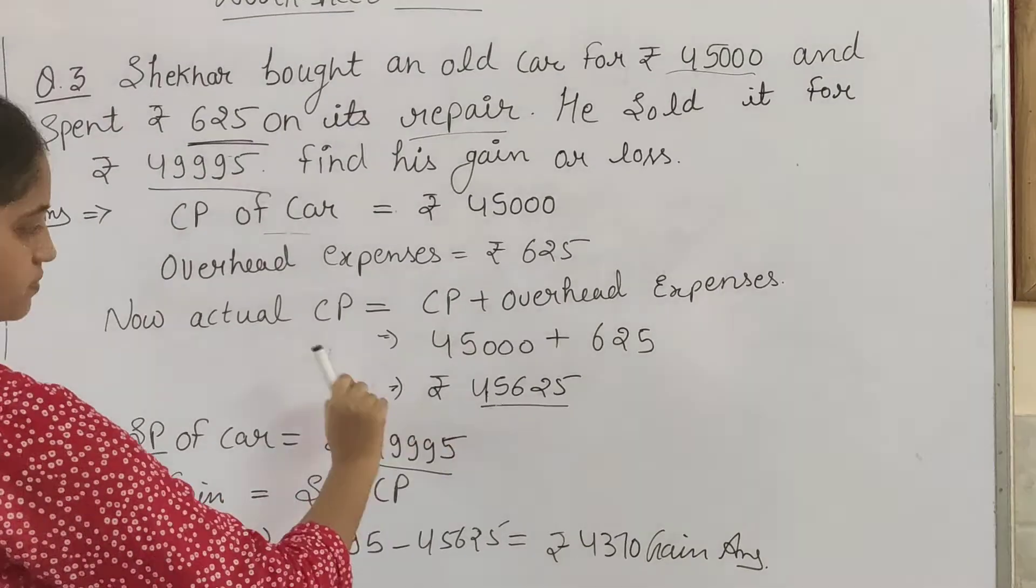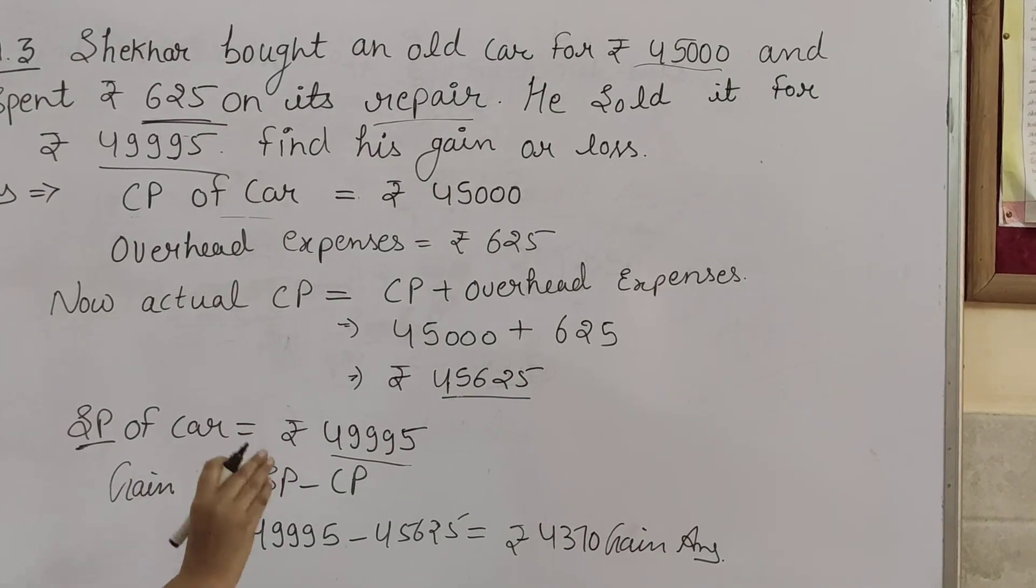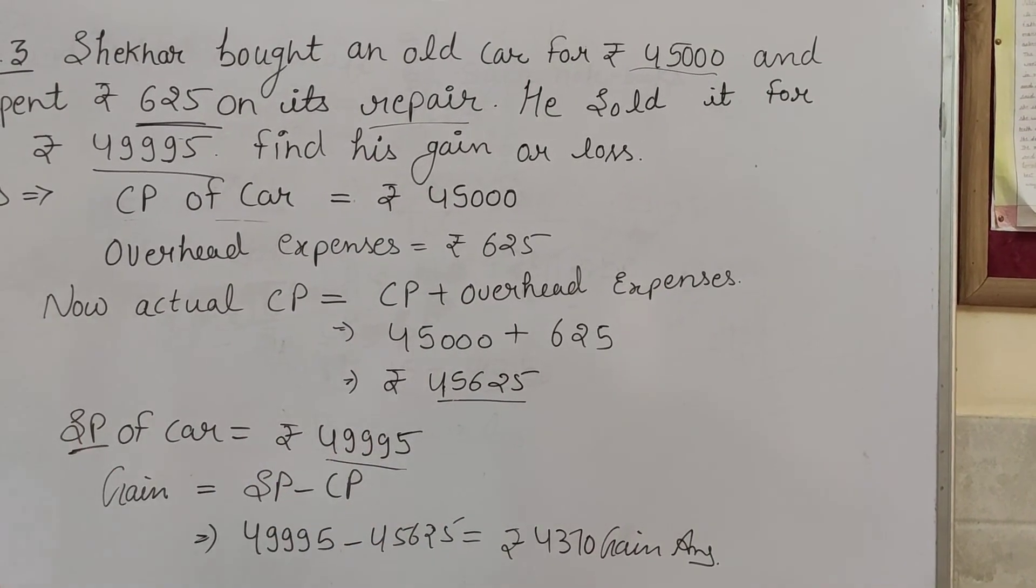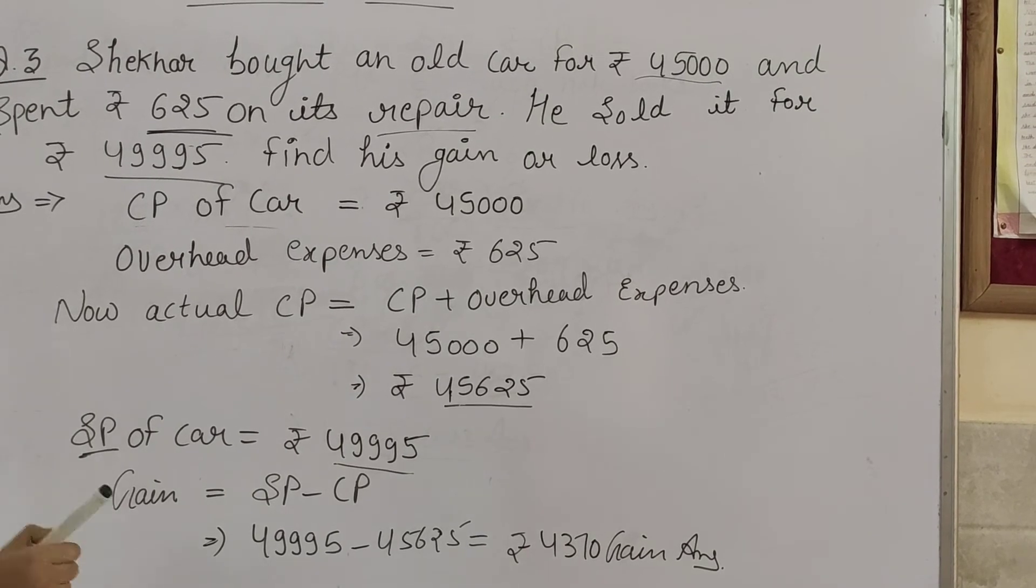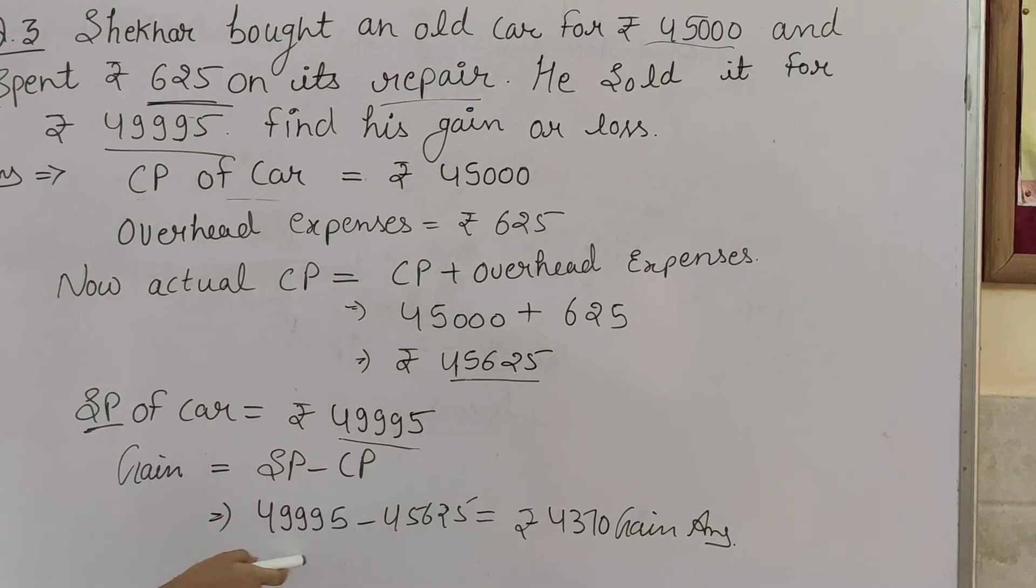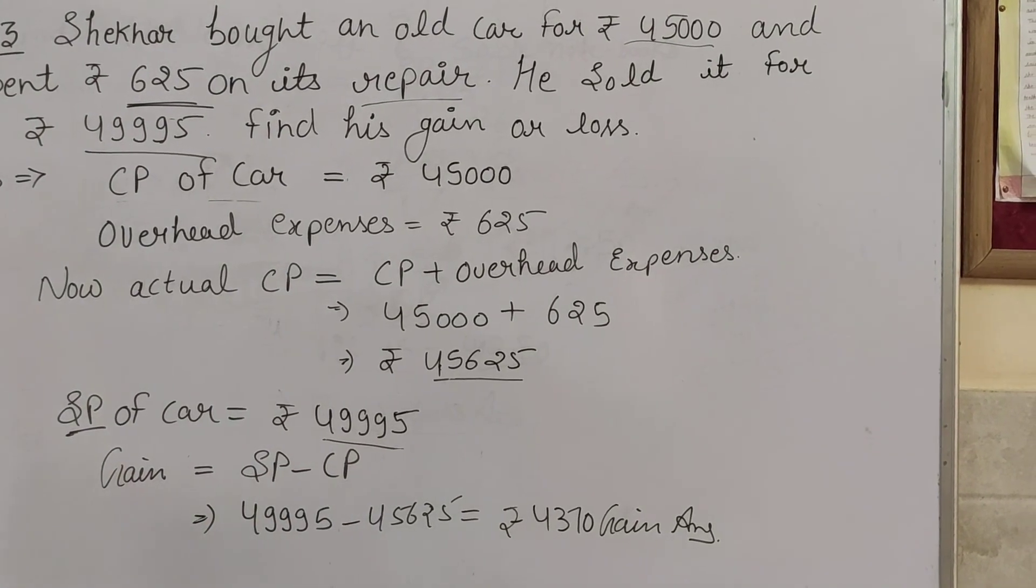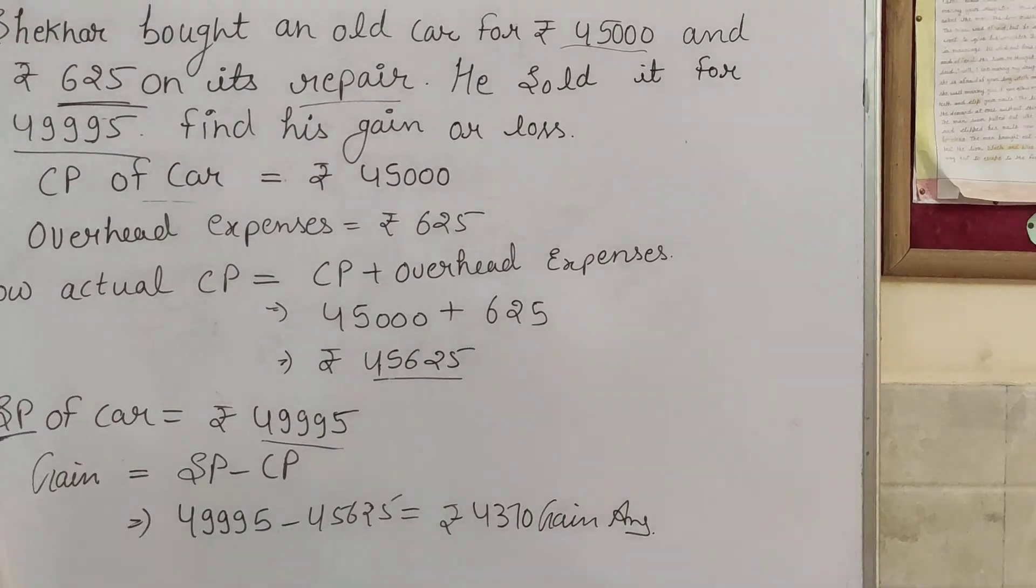The selling price of the car is ₹49,995. So what is the cost price? ₹45,625. And the selling price is ₹49,995. We can see that the selling price is more than the cost price, which means profit or gain. So how do you get gain? SP minus CP. When we calculate, the answer is ₹4,370 profit.